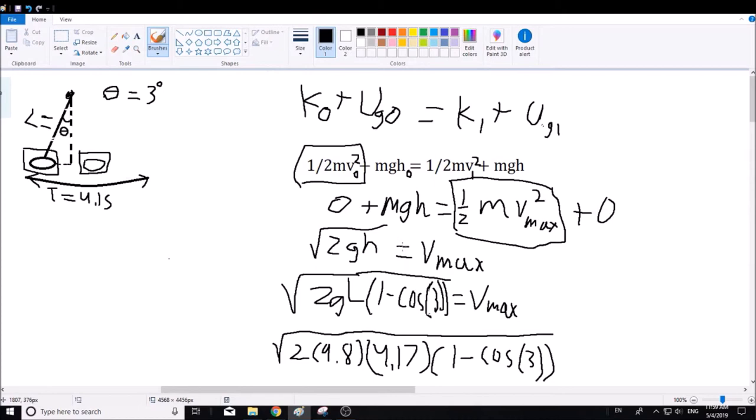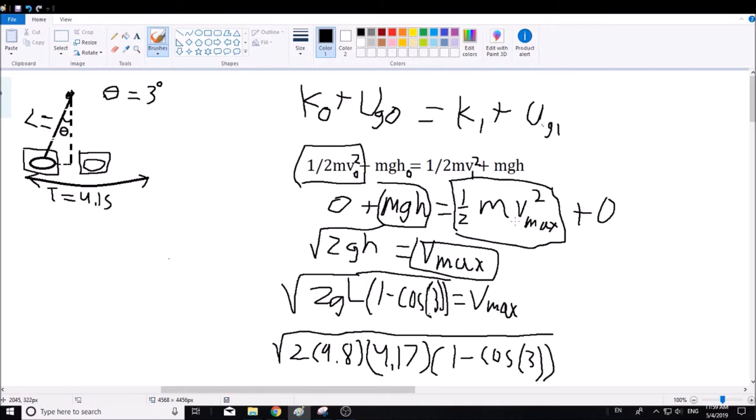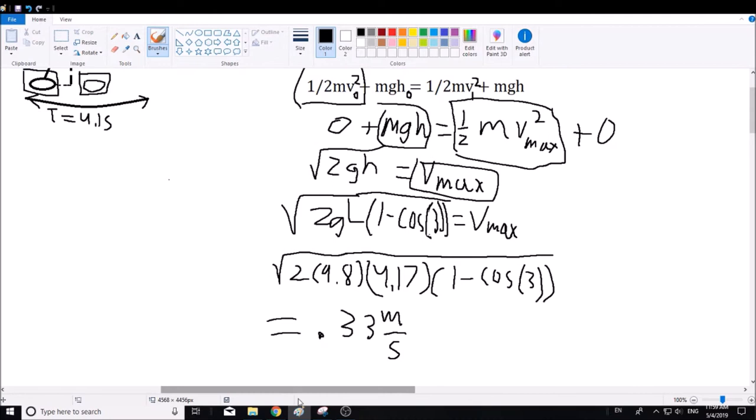Rearranging these energy equations, we can find Vmax with the potential gravitational energy equation, making it equal to the kinetic energy equation. We now have that the square root of 2g times the height is equal to Vmax.